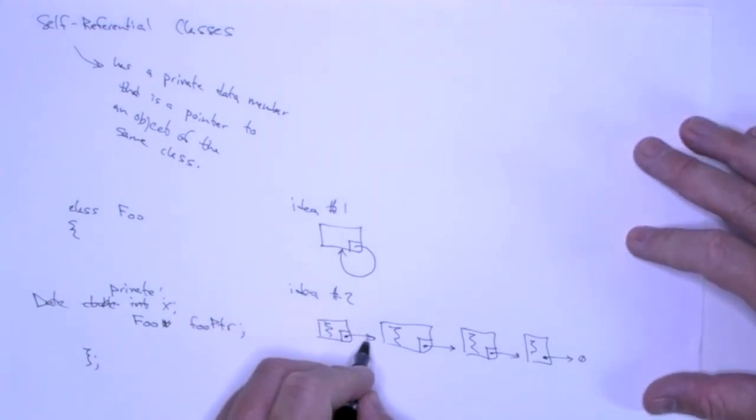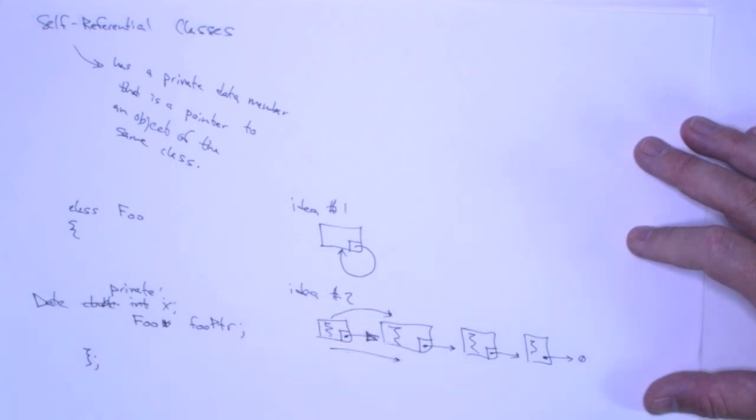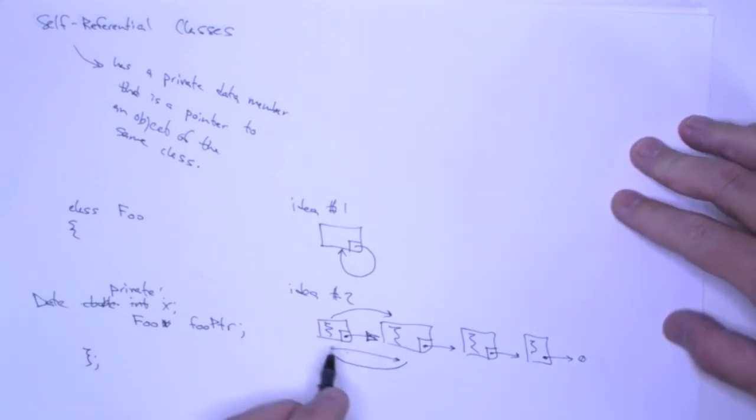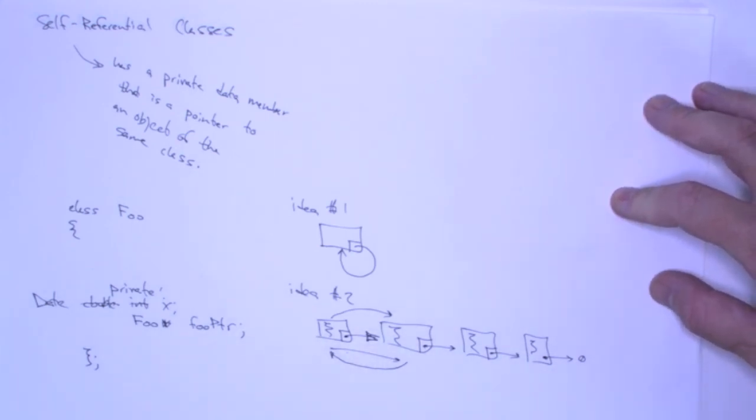Also, pay attention to the fact that these arrows are directional. So I can move from this node to this node, but it is not possible for me to move from this foo object backward in the chain. Now, we'll look at structures where we can actually do that.